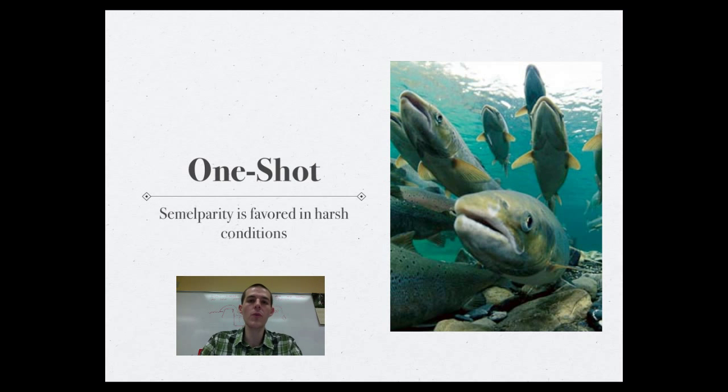Now, when we are talking about different life strategies, there's essentially two extremes when it comes to reproduction, and then a lot of stuff in between. So I'm going to talk about the two extremes, but recognize that most animals fall somewhere in between these two extremes. So the first extreme is one shot. It's called semelparity, and it's favored in harsh conditions.